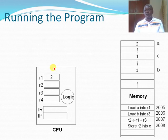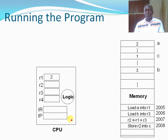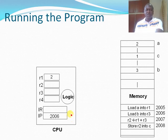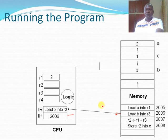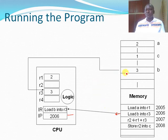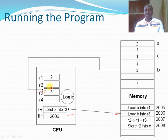As soon as that is done, the next instruction is executed. The instruction pointer increments by one to address 2006. The content of the instruction at that location is loaded into the instruction register, and the CPU then copies the content of variable B, or memory location B, into register R3.